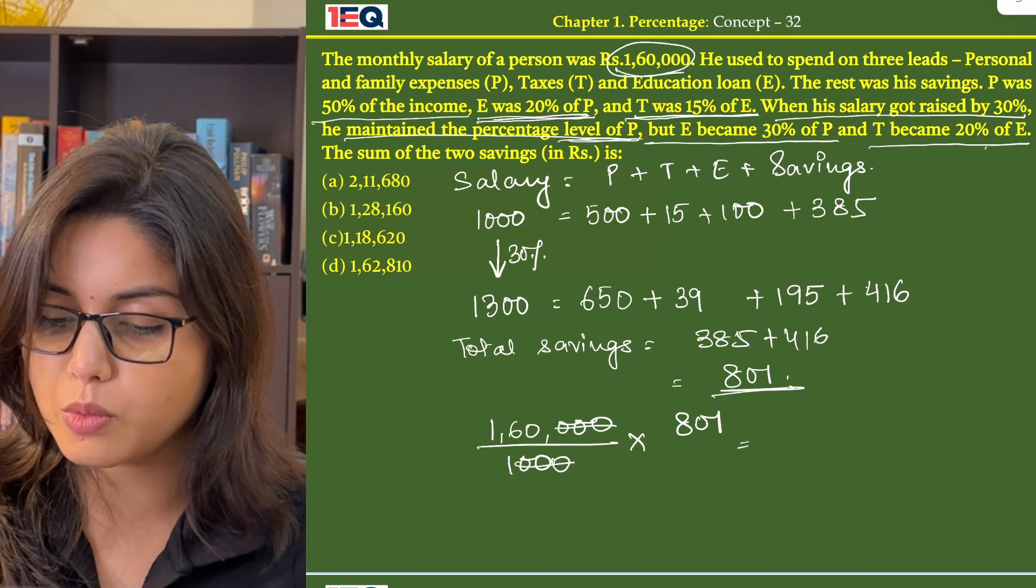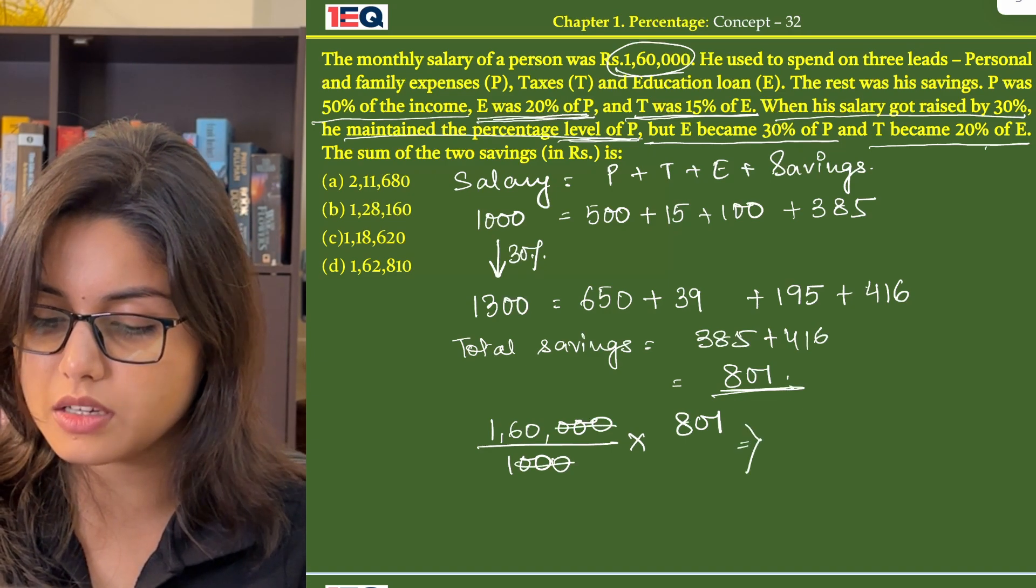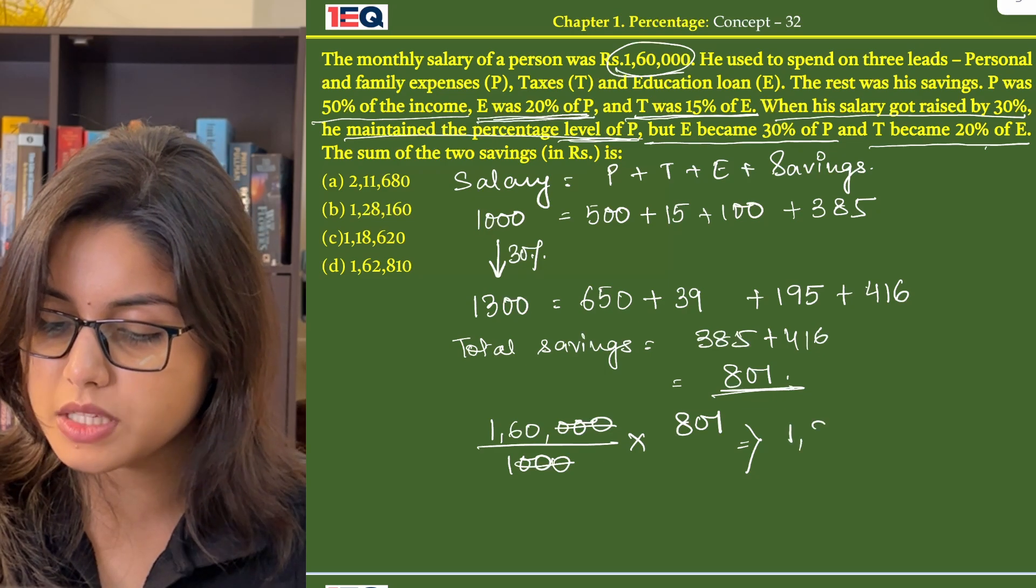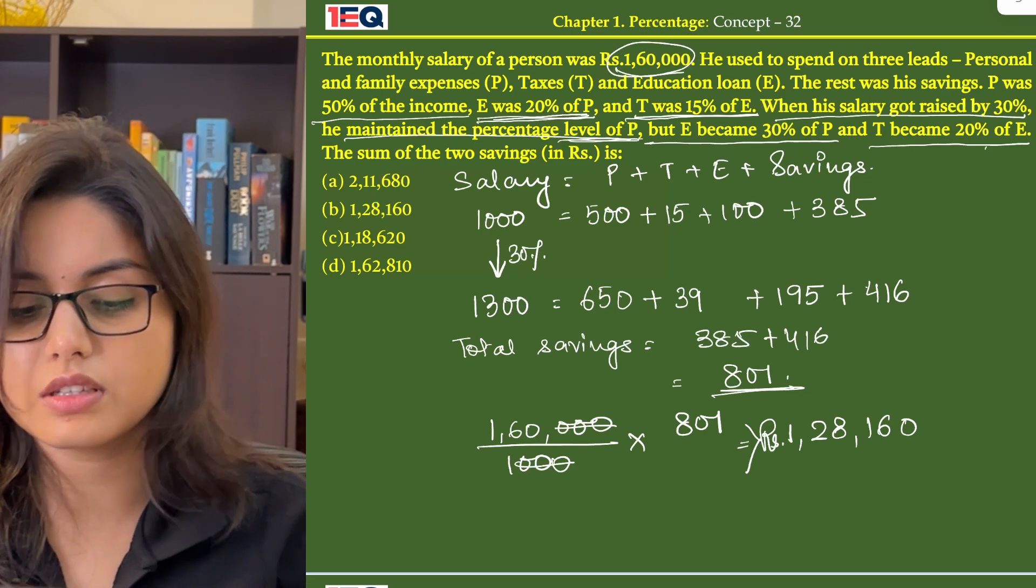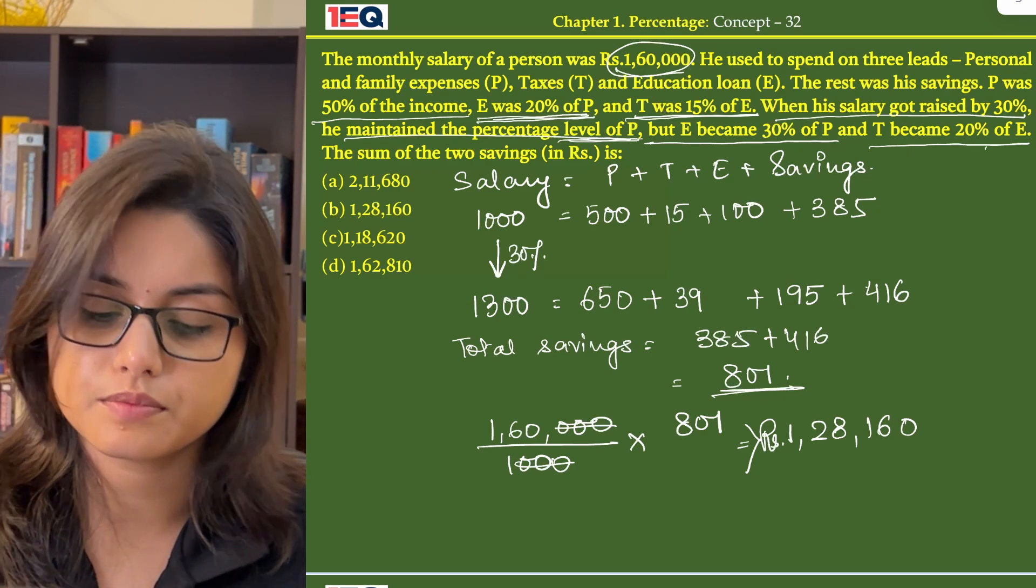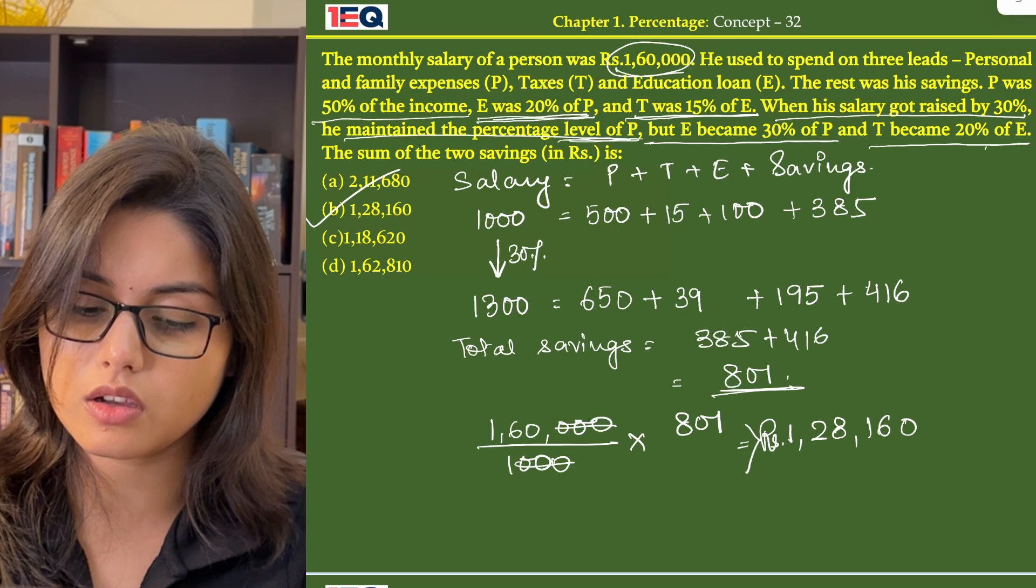0 gets cancelled. So 160 into 801 gives us Rs 1,28,160. So the answer to this question is option B that is 128,160.